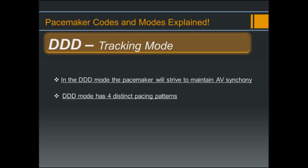Another thing to note is that with DDD pacing mode, there are four distinct pacing patterns that you could potentially see at any time, depending on the patient's intrinsic conduction. These patterns are: A sense/V sense, A sense/V pace (also known as P-wave tracking), A pace/V sense, and A pace/V pace.